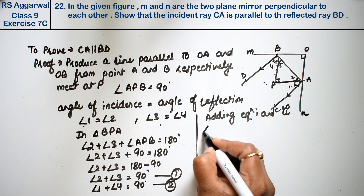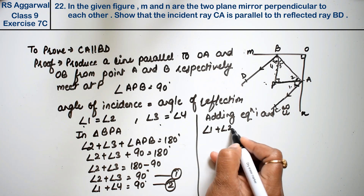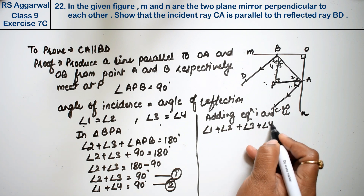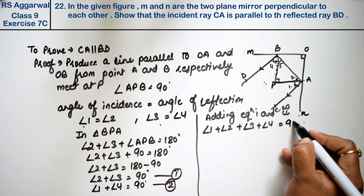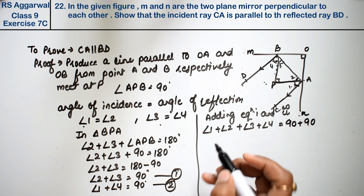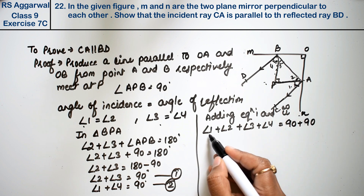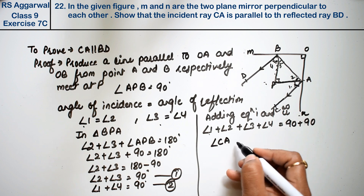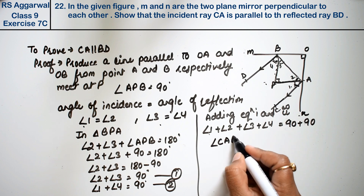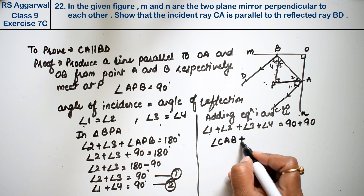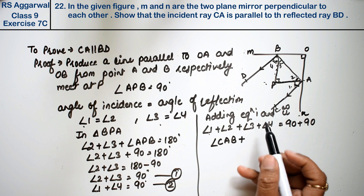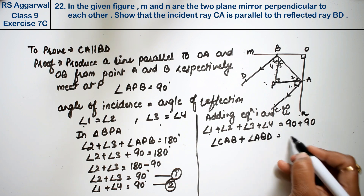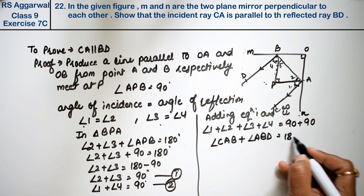Adding both equations, we get angle 1 plus angle 2 plus angle 3 plus angle 4 equals 90 plus 90, which is 180 degrees. Angle 1 plus angle 2 forms angle CAD, and angle 3 plus angle 4 forms angle ABD. So angle CAD plus angle ABD equals 180 degrees.